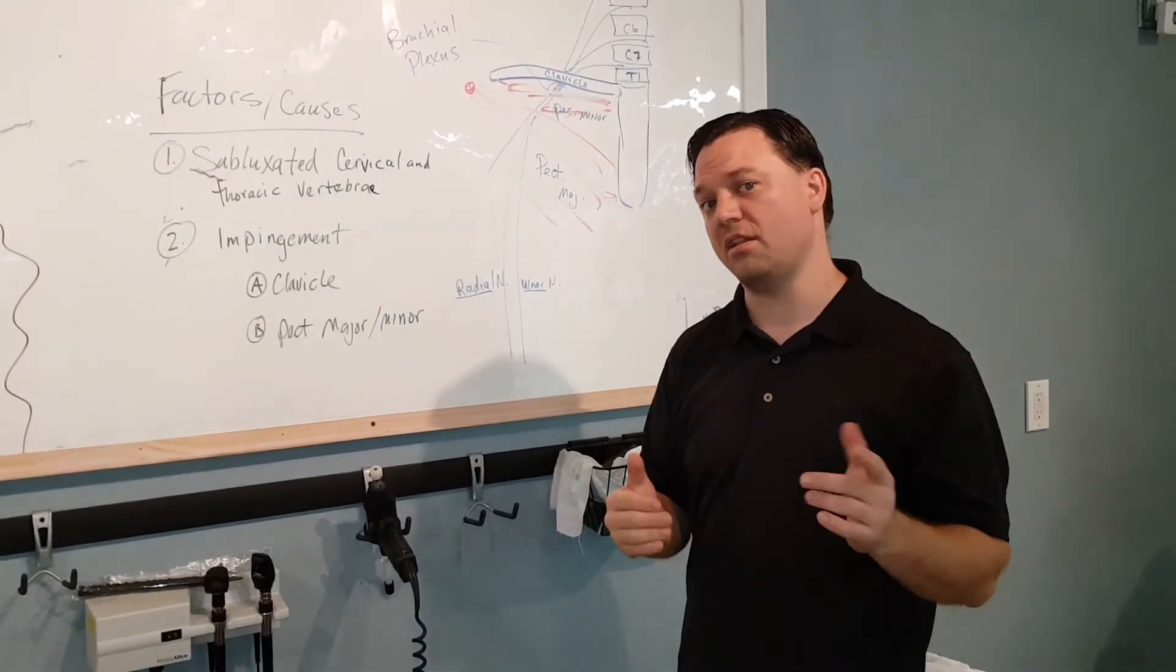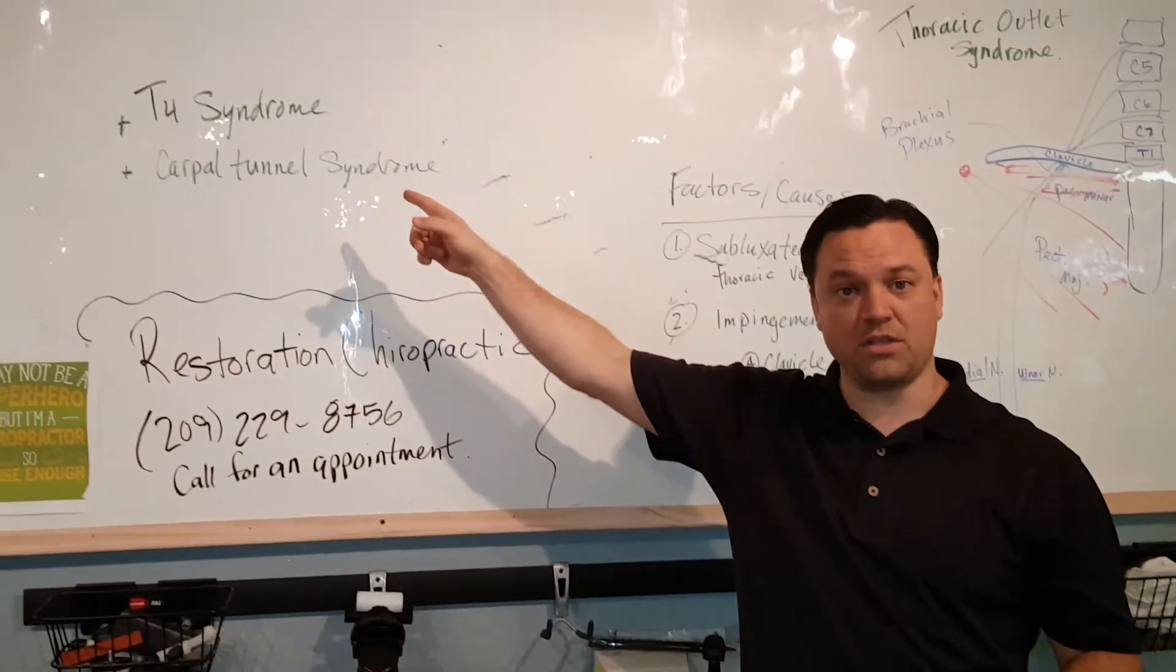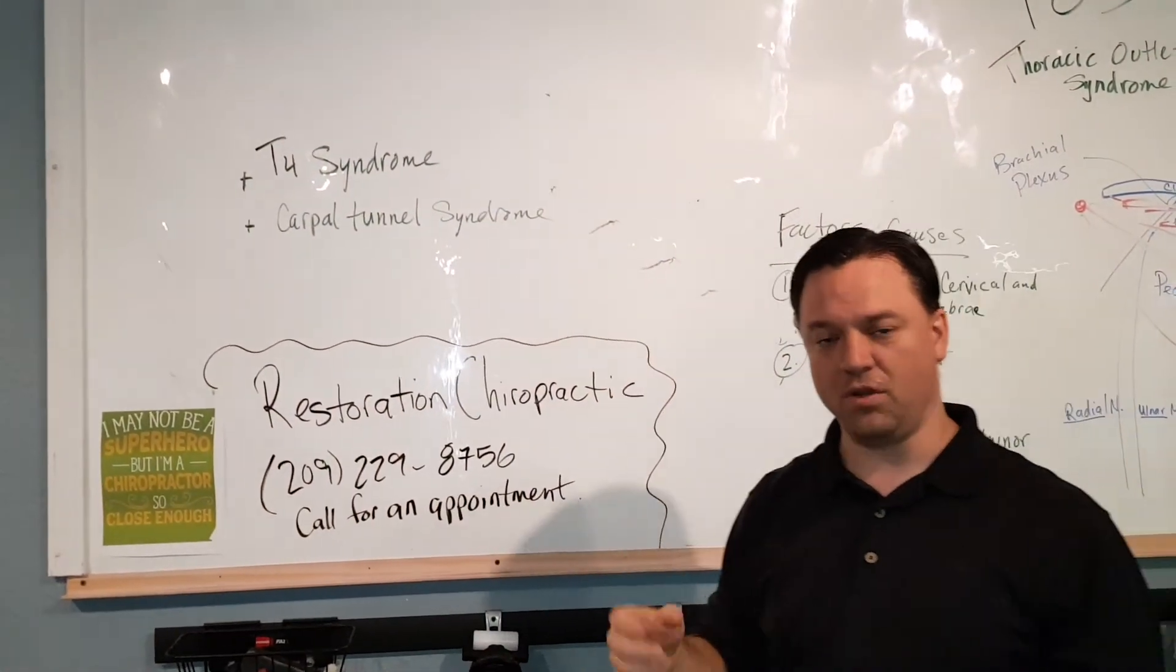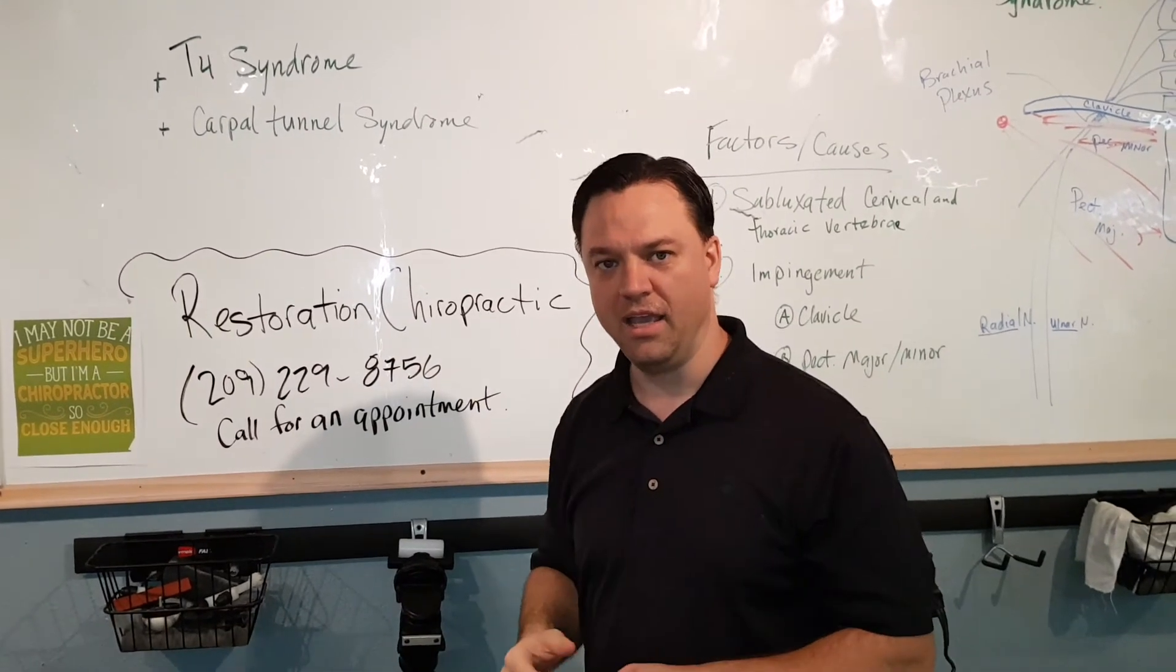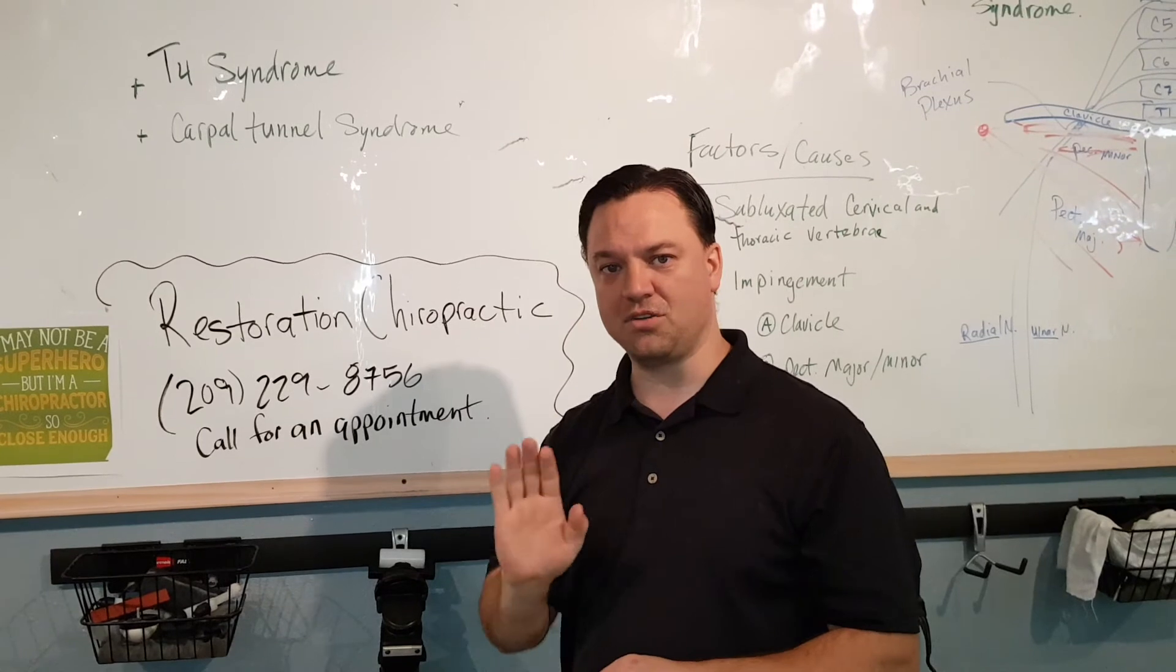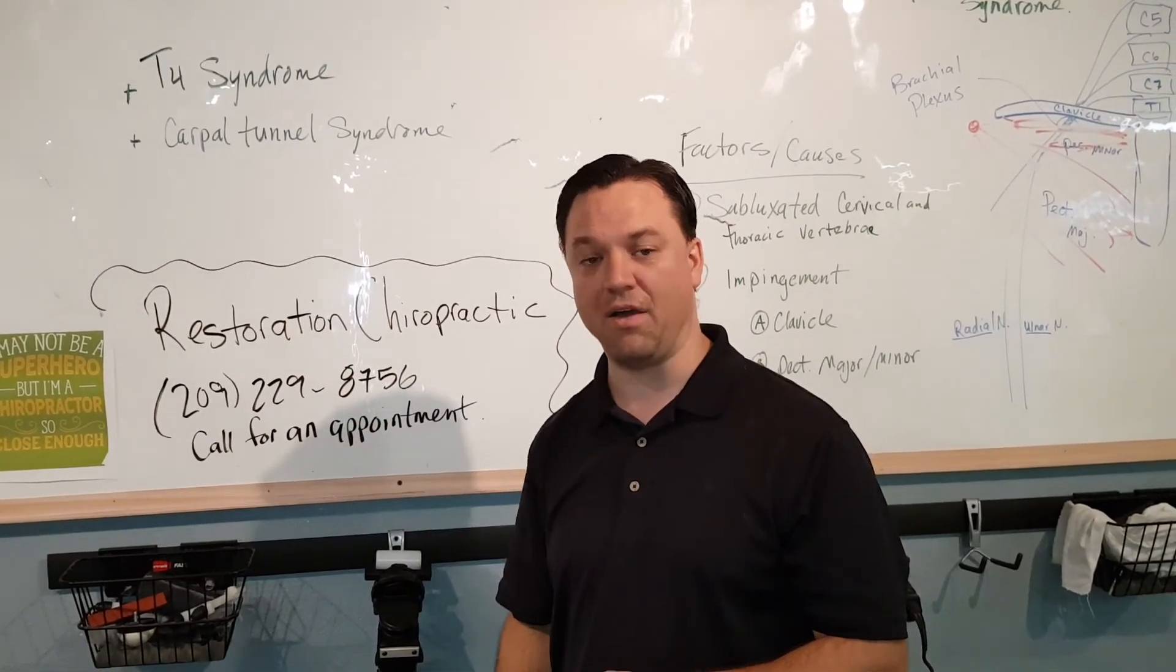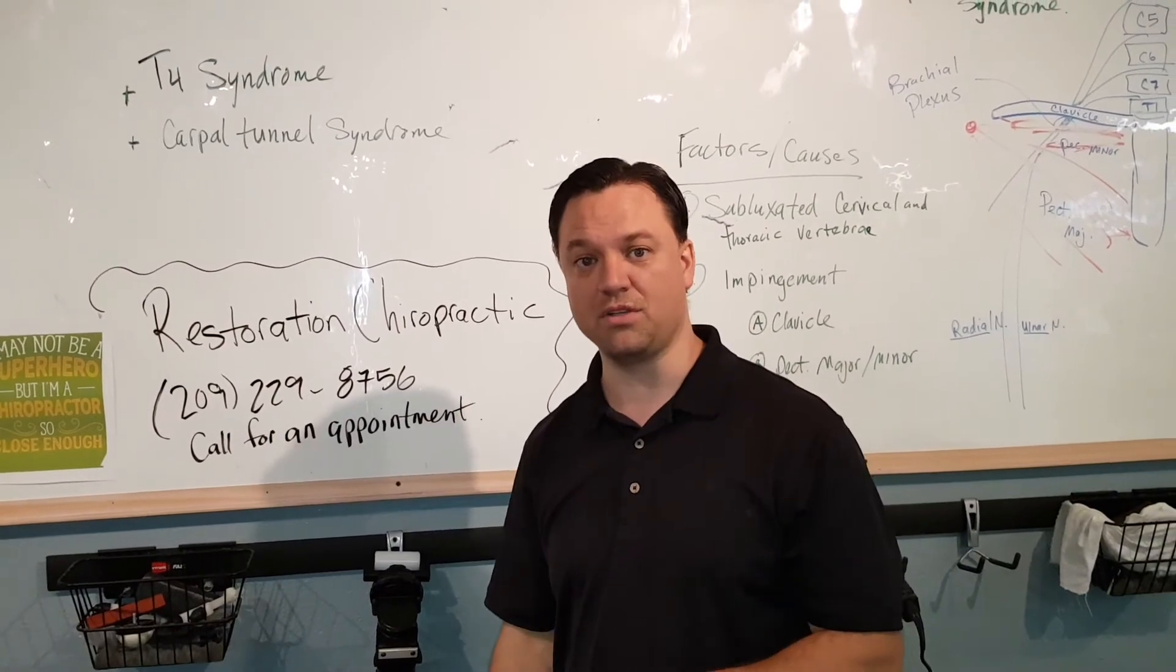Now there are two other things that are associated with thoracic outlet syndrome. One of which is T4 syndrome, and that is when the middle of your back is also having some issues, especially in the upper middle. That can actually translate to pain and different nerve pathways going up and down to the arms. It usually goes into both hands.